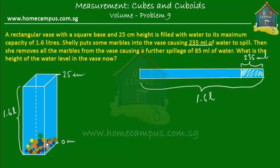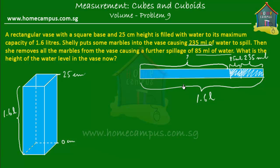She didn't like the marbles in the vase, so she put her hand into the vase and removed every single piece of marble, causing a further spillage of 85 ml of water. So she removed all the marbles from the vase, and 85 ml of water also spilled out. How much water was left in the vase? This is how much water was left. Your task is to find out the height of the water level in the vase now. The water level has dropped — we've got to find out what this height of water is in the vase.